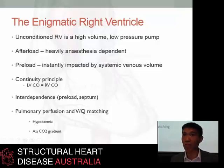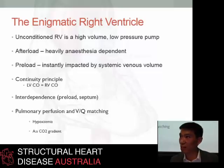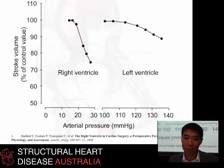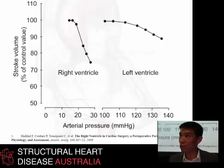With direct relevance to critical care physicians managing patients' ventilation in the operating room, as soon as there's any degree of hypoxemia or change in arterial CO2, we know that a normal dynamic pulmonary circulation will automatically increase its afterload and strain the right heart again. This is a very eloquent demonstration of that effect through research in physiologically normal right ventricles, where if the pulmonary artery pressure increases as a result of pulmonary vascular resistance, the stroke volume of the right side declines very rapidly compared to that of the left.